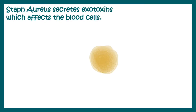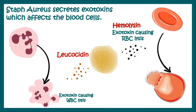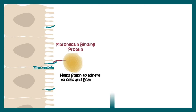Staphylococcus aureus secretes exotoxins which affect blood cells. For example, Hemolysin causes lysis of RBCs, and Leukocidin causes lysis of WBCs. Apart from that, it produces a fibronectin-binding protein on its surface, which binds to fibronectin present on the extracellular matrix, helping the Staphylococcus adhere to cells and the extracellular matrix.